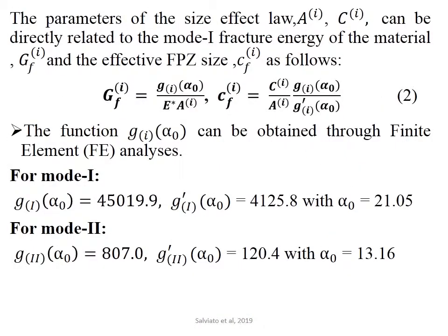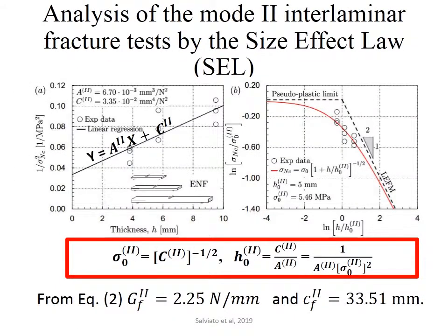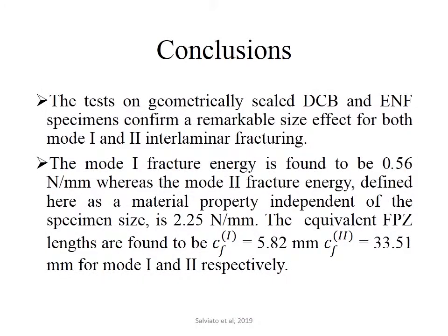In this equation, G(alpha) and G-prime(alpha) are obtained from finite element analysis. These are the G(alpha) and G-prime(alpha) values for the two different modes. This curve shows the analysis of mode 1 interlaminar fracture test by the size effect law, and this shows the analysis of mode 2 interlaminar fracture test by the size effect law.